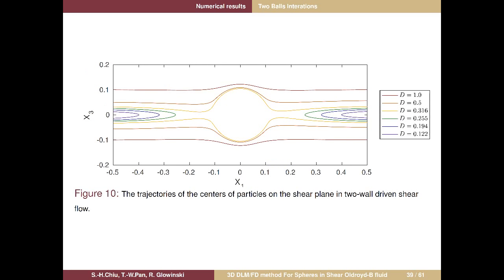The results show two different trajectory types on the shear plane (x2 = 0). The outer three trajectories are passing motion: two balls approach then pass each other. The inner three trajectories are called return motion: two balls approach, then repel, then reverse. These are the only two motions found in Newtonian fluid.